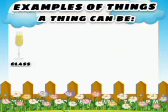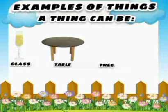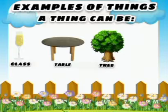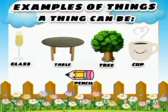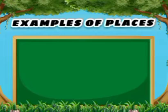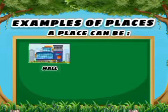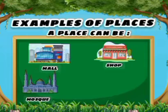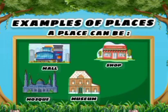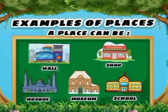Now we will discuss the examples of things. A thing can be a glass, a table, a tree, a cup, a pencil, and so on. Now we will discuss the examples of places. A place can be a mall, shop, mosque, museum, school, and so on.